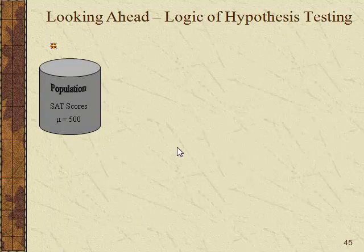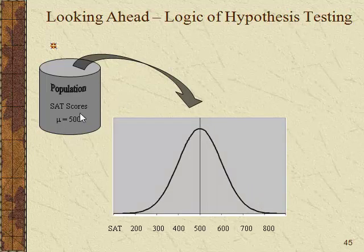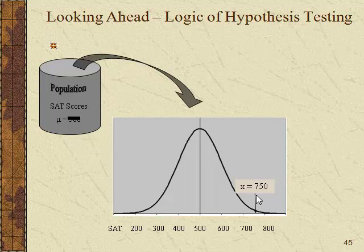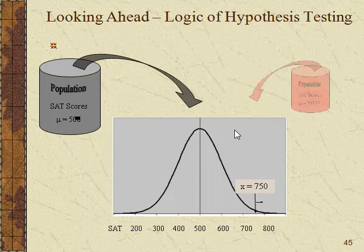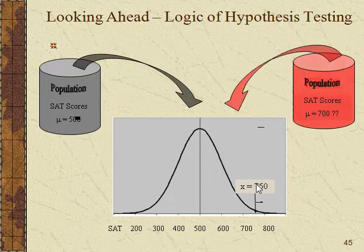Moving ahead, I want to give a quick snapshot of the logic of hypothesis testing. If we're pulling SAT scores out of a population, we assume a normal distribution. For a specific score like 750, you can make one of two guesses: this is a normal person from a normal population with a mean of 500 and a standard deviation of 100, or it's a special person from a special population — perhaps kids who had special tutoring or advanced training that makes them fundamentally different from the normal population.